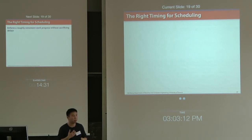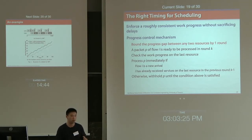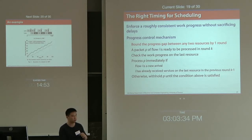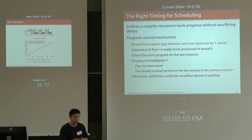We need a mechanism to enforce the right timing for scheduling, called the progress control mechanism. The basic idea is to bound the progress gap between any two resources by one round. Suppose packet P is ready to be processed in round K. We check the work progress on the last resource and process packet P immediately if its flow is a new arrival (i.e., first packet of the flow) or if its flow has already received service on the last resource in the previous round K-1. Otherwise, we wait until this bound condition is satisfied.